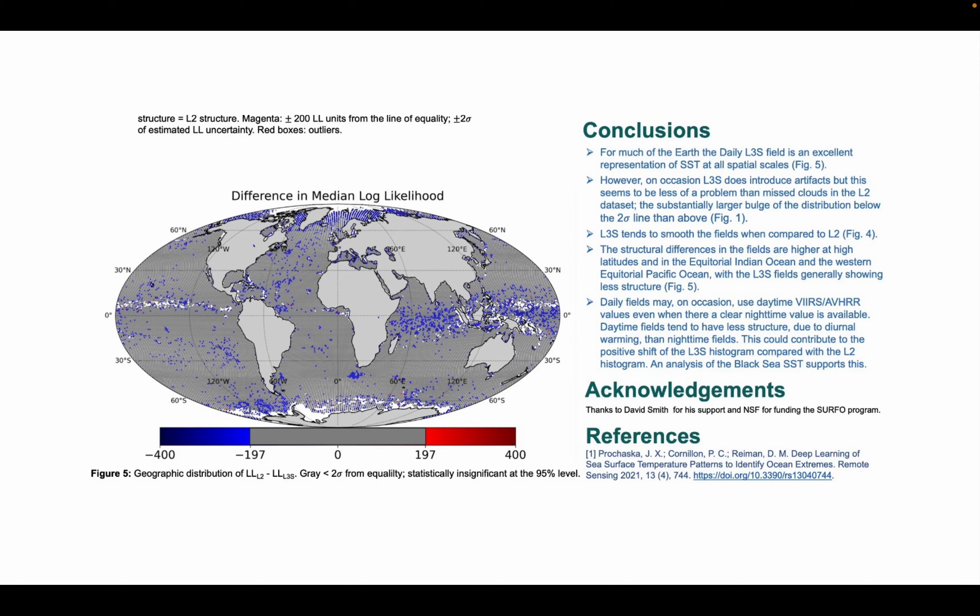In conclusion, we see in the plot on the left that the majority of locations around the world are fairly well represented in the L3S daily fields. On occasion, Level 3 super-collated daily does introduce artifacts, yet it seems to be a much larger factor in missed clouds in the VIRS dataset, creating the effect of lower log-likelihood in the VIRS cutouts that we're seeing. The structural differences are most likely in the equatorial regions and at high latitudes, with the L3S cutouts generally showing more structure.